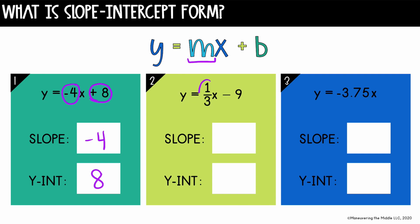In our second equation, just by looking, we see that the coefficient next to x is one-third. So the slope is one-third. And then here at the end, the y-intercept would be negative nine. It would cross the y-axis at negative nine.